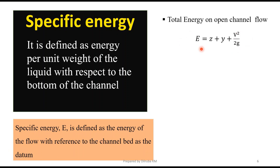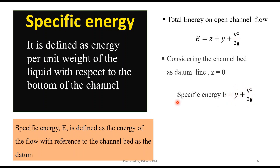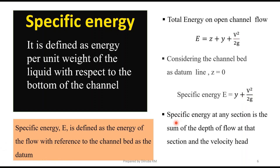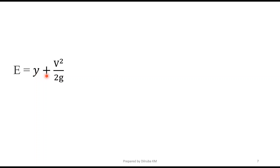The equation for total energy in open channel flow is E = z + y + v²/2g. When we consider the channel bottom as datum, z becomes zero because the datum surface coincides with the channel bed. So the specific energy equation becomes: E = y + v²/2g. This is the equation for specific energy, containing the depth of flow and the velocity head.